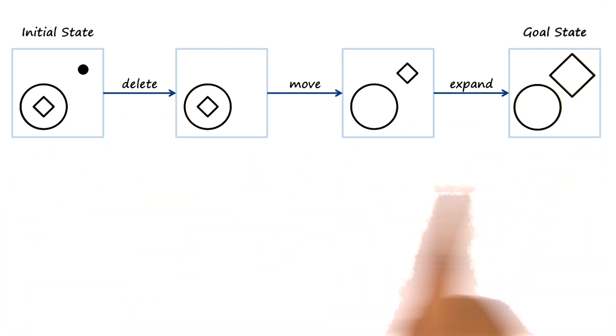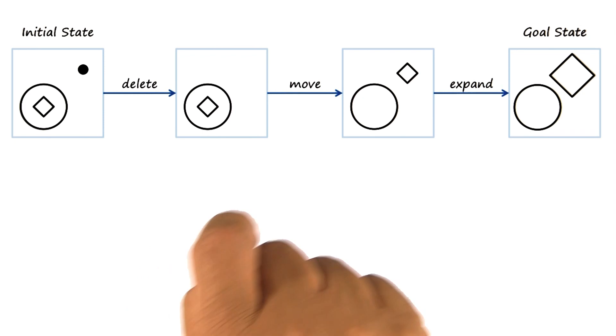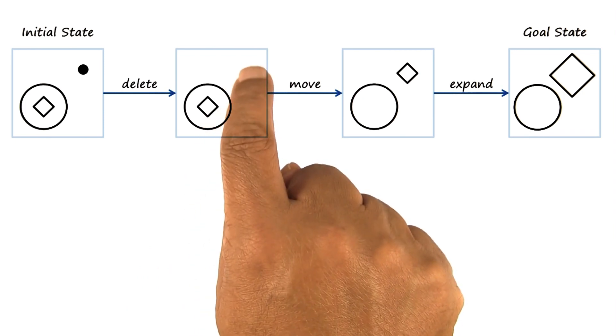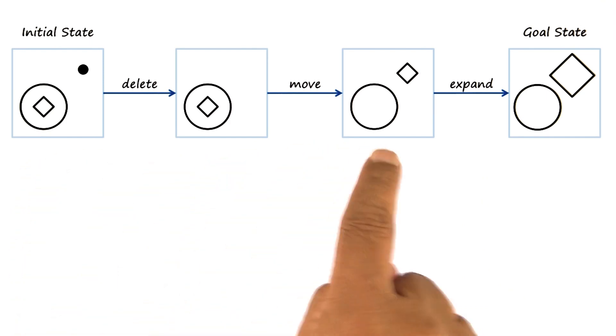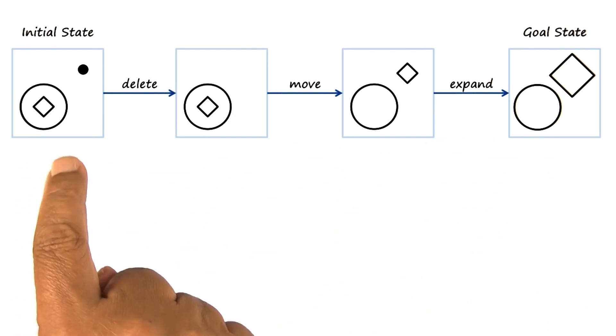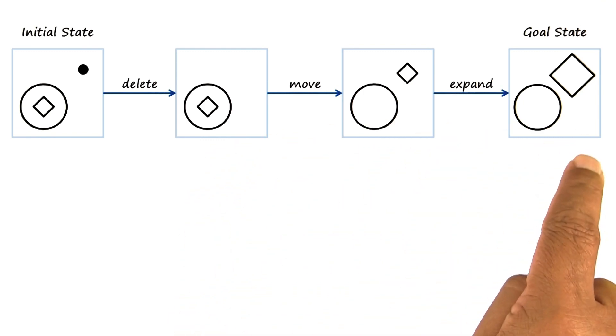Here is one sequence. Delete the dot, then move the diamond outside the circle, then expand the diamond. Let us now see, we can think of this as an output of mean sense analysis, because each move here brings us a little closer to the goal state.